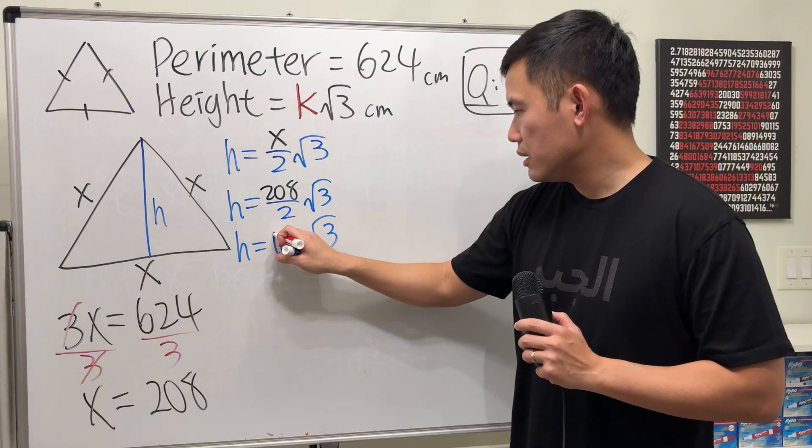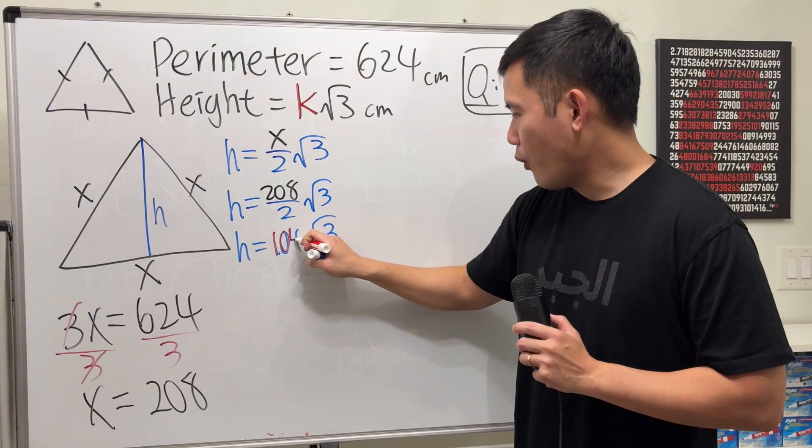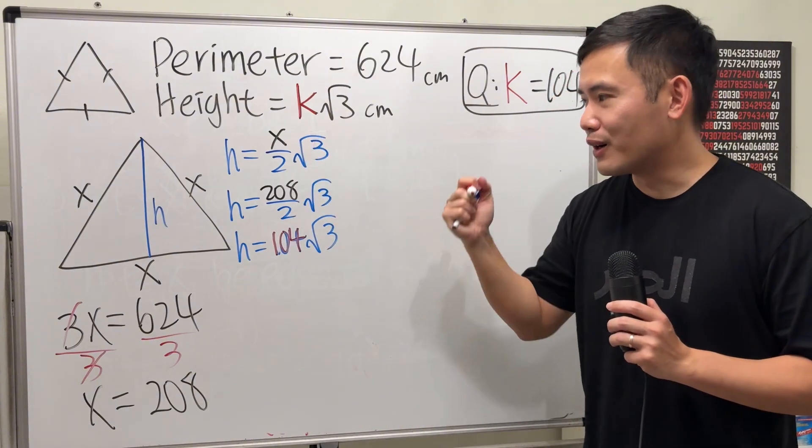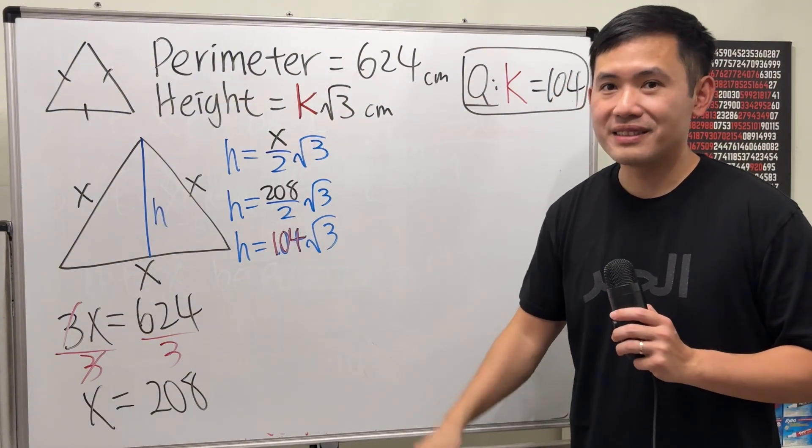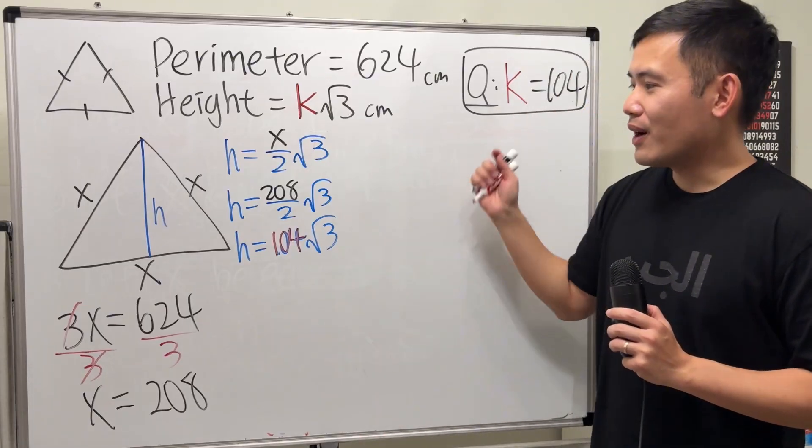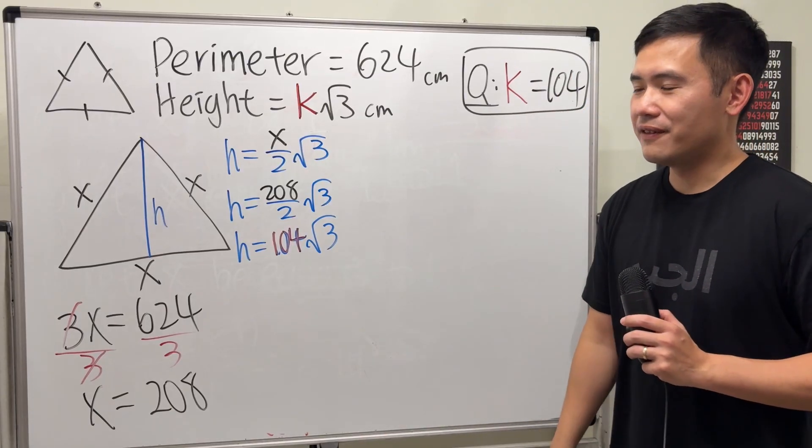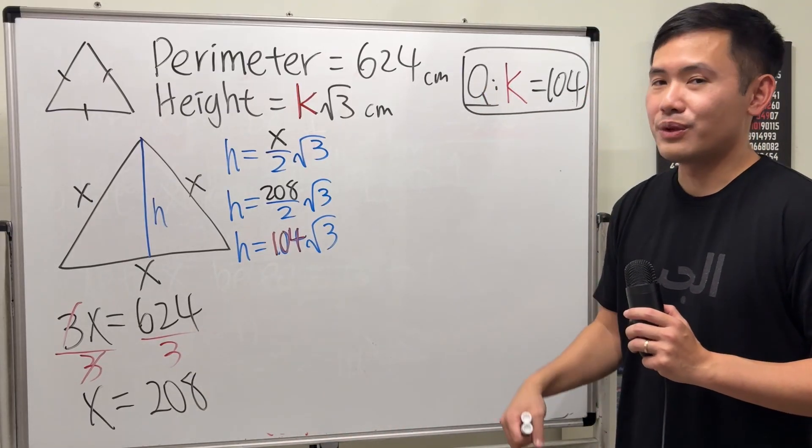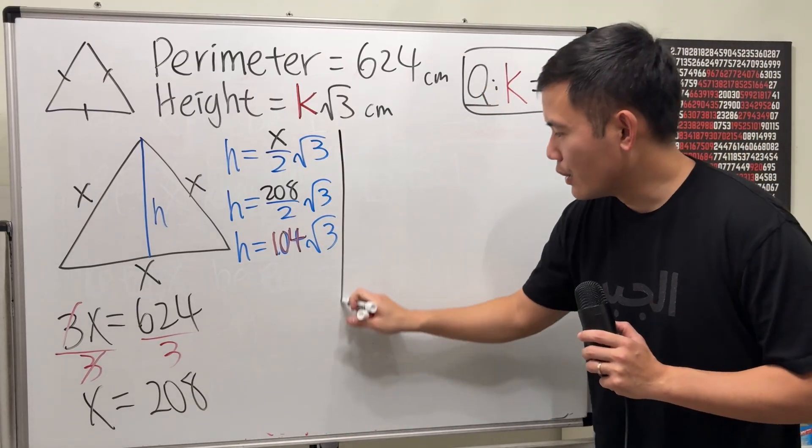And as we can see, the 104 is the k value. And we are done. Just like that. Now, why is this true though? If you know this fact, of course, you can finish the question in like 5 seconds or 10 seconds, divide it by 3, and then divide it by 2. Done, right? But let's take a look at why this is true.